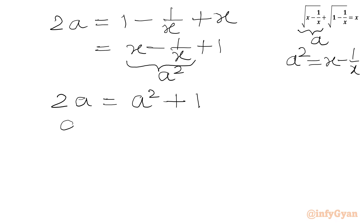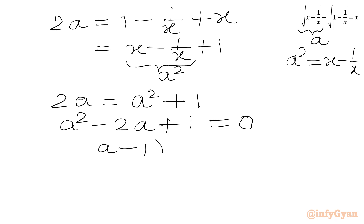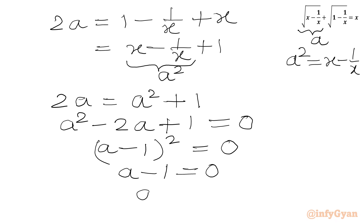Our equation becomes 2a equal to a squared plus 1. Moving all terms to one side: a squared minus 2a plus 1 equal to 0. This factors using an algebraic identity as (a minus 1) squared equal to 0. Taking the square root of both sides gives a minus 1 equal to 0, so a equals 1.